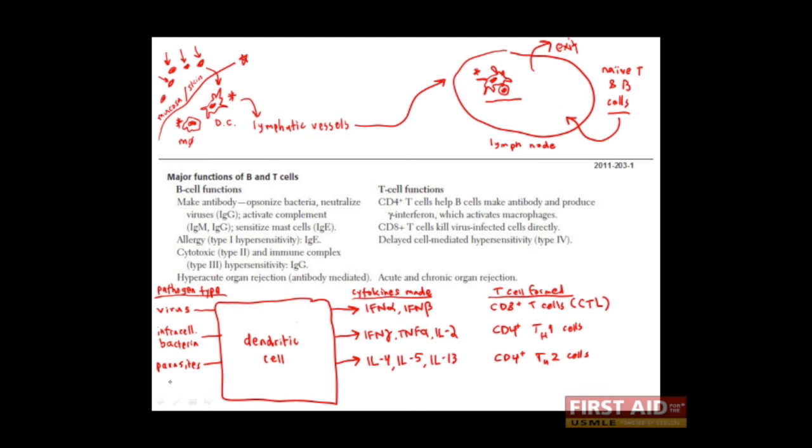The last major pathogen type, of course, is extracellular bacteria in fungus, which I'll just abbreviate BNF. And when these are recognized by dendritic cells, they stimulate the production of interleukin-6 and interleukin-17. And these favor the activation and proliferation of a type of CD4 cell, better known as TH17 cells.